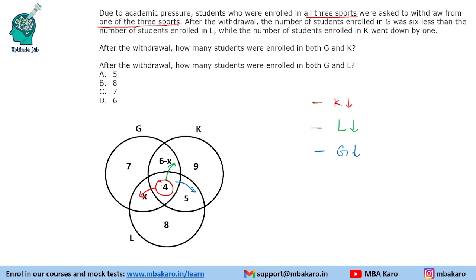Now it says after the withdrawal, the number of students enrolled in G was 6 less than the number of students enrolled in L, while the number of students enrolled in K went down by 1. So this is given as 1. So it means that this 4 will now shift to this region. One of the values will shift to K. We need to shift the other 3 students also.